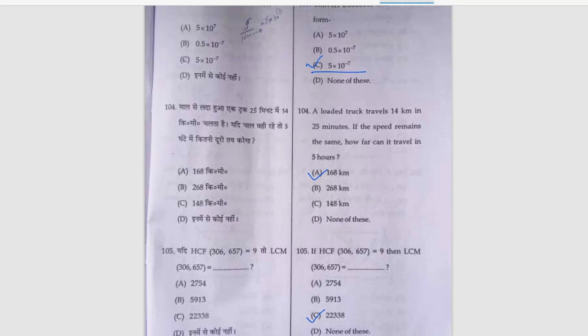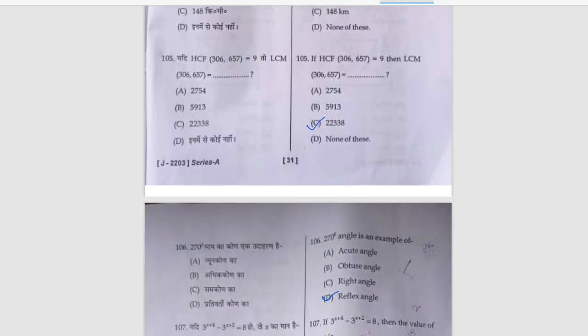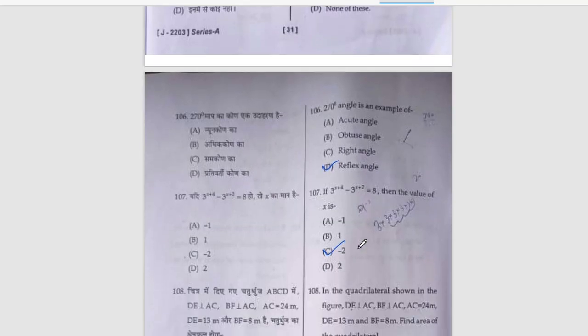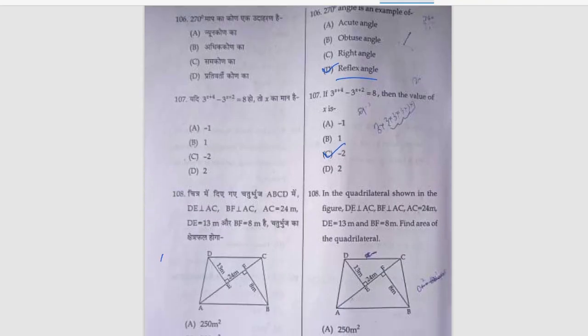A lorry truck travels 14 km in 25 minutes. If the speed remains the same, how far can it travel in 5 hours? That is 168 km. Next is HCF of 306 and 657 is 9, then LCM is 22,338. 270 degrees is an example of reflex angle.